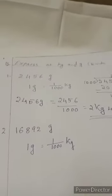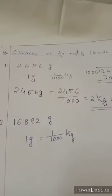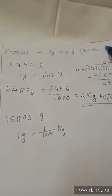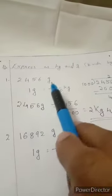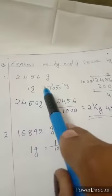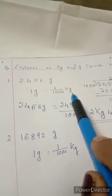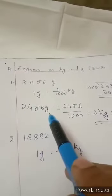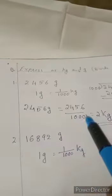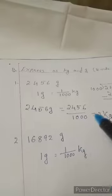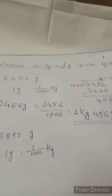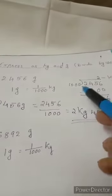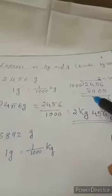Bit B, express as kg and grams. For that, we have to divide this gram by 1000. So first example, 2456 gram. You will write 1 gram is equal to 1 by 1000 kg. 2456 gram is equal to 2456 divided by 1000. You will divide this by long division method. 2456 divided by 1000.